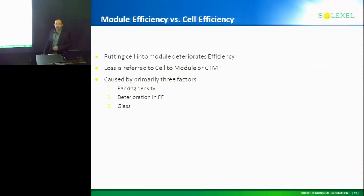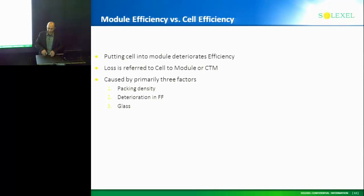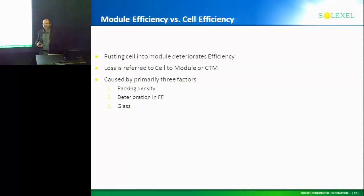Now, transitioning quickly to module efficiency versus cell efficiency. When you put a cell in a module, you lose efficiency — about 2 to 3%. Where does this loss come from? Number one, packing density: you can't pack cells without gaps, and primarily because these cells are not full squares — they're pseudo-squares with chamfered edges, creating diamond-shaped gaps. Second, connecting them with strings causes I²R power losses, which affect the fill factor. Finally, encapsulating in glass creates parasitic losses that reduce light coupling, losing some efficiency there.